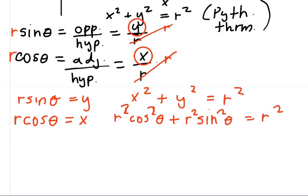Now what we can do is factor an r squared out from the cosine squared and the sine squared of theta. So cosine squared of theta plus sine squared of theta, and that equals r squared.